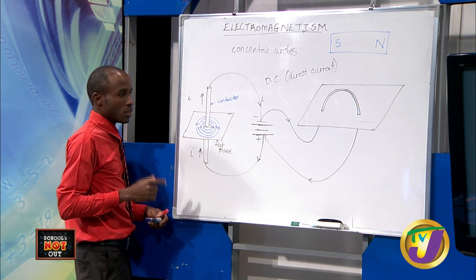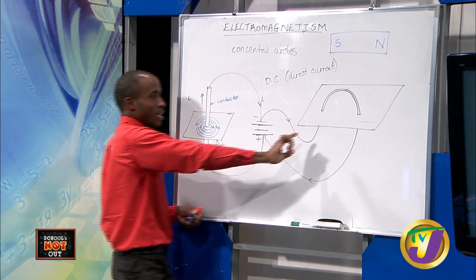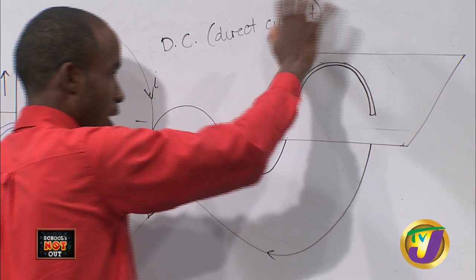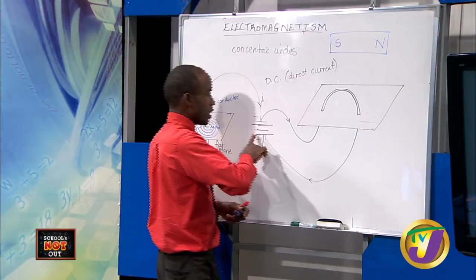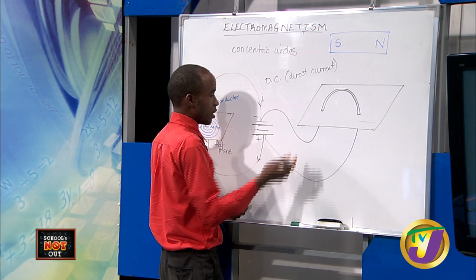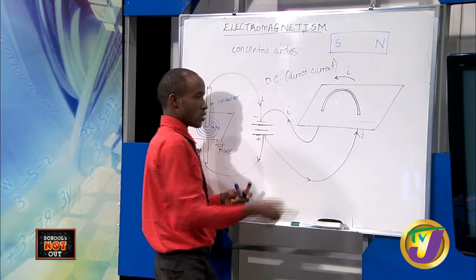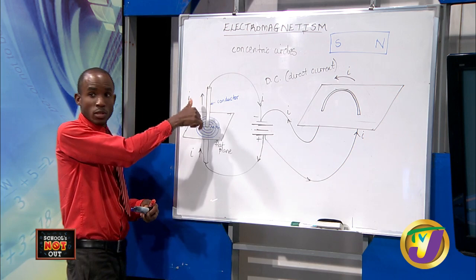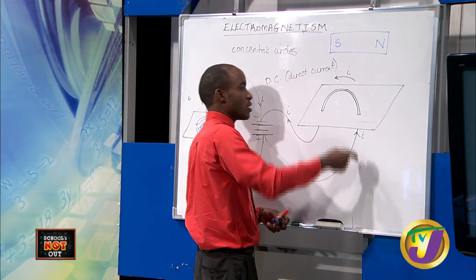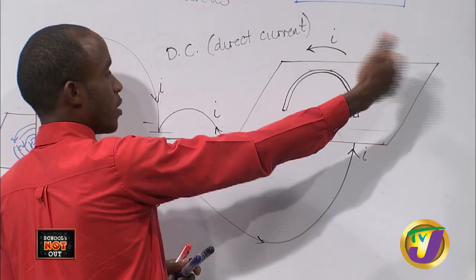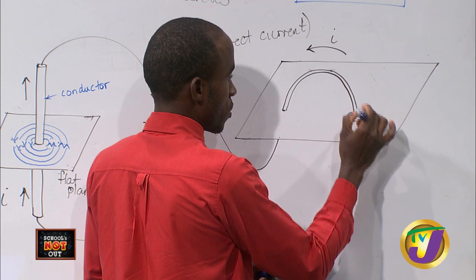Let us look at a situation where we take that same straight conductor and loop it into a circle. This is just the top half of a circular conductor. If that current was carried through a circular conductor — remember, conventional current flows from positive to negative — the current is going up and over. The same application from the straight conductor is extended here to a loop. The same thing happens on this side: when it goes up, it curls around, and we have concentric circles going around as such.